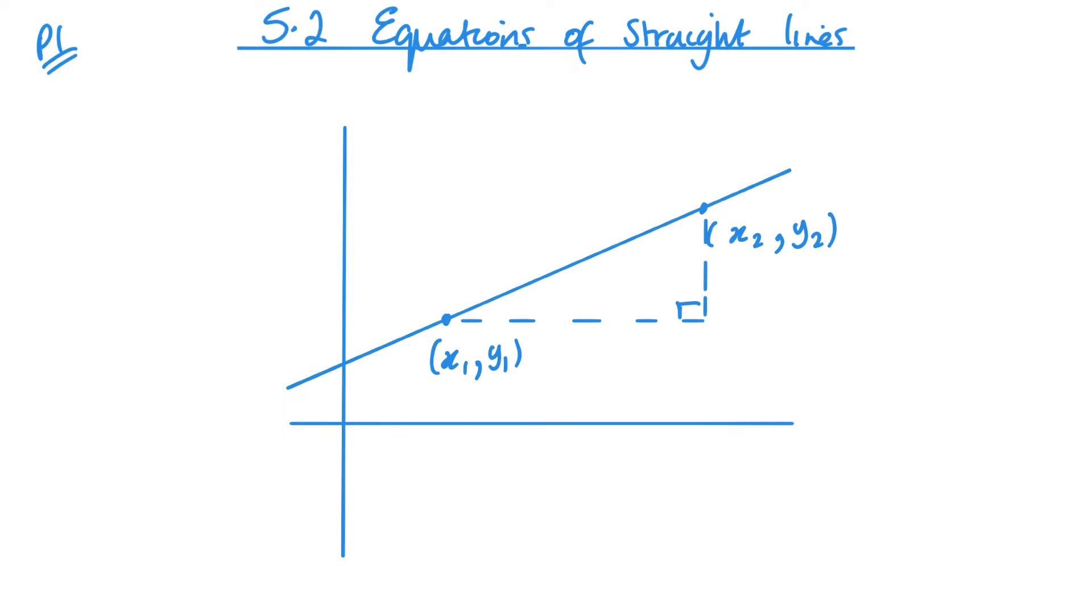The gradient is the difference in y divided by the difference in x. And then this can be rearranged to give us y minus y1 equals m times x minus x1, which is an equation that we use a lot.